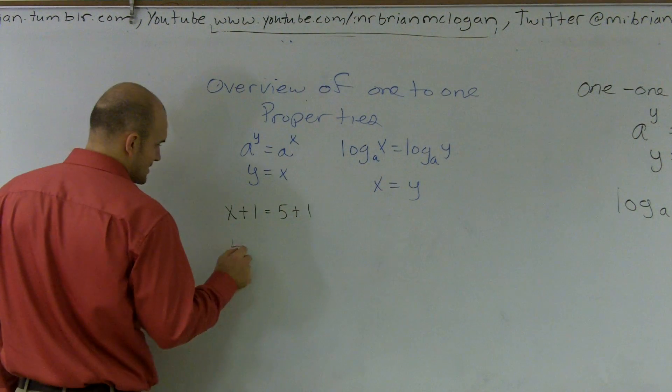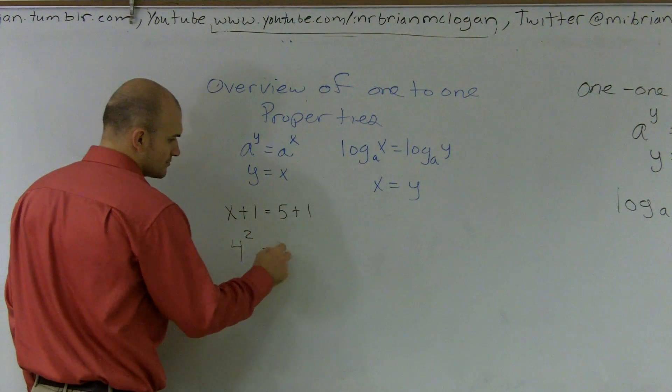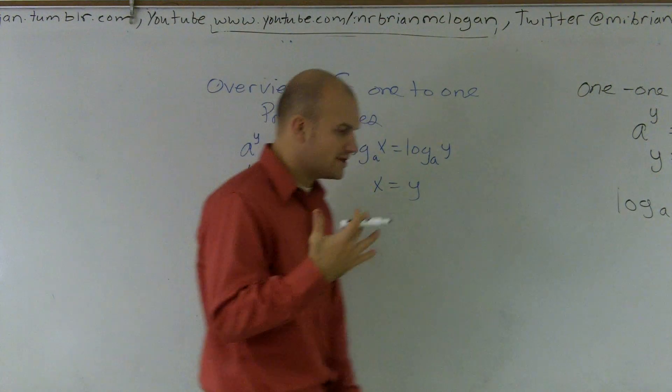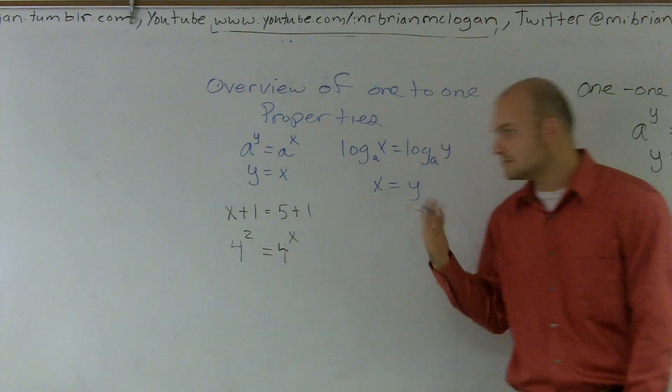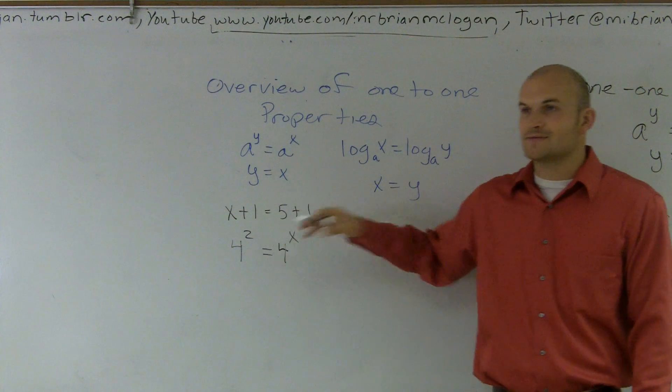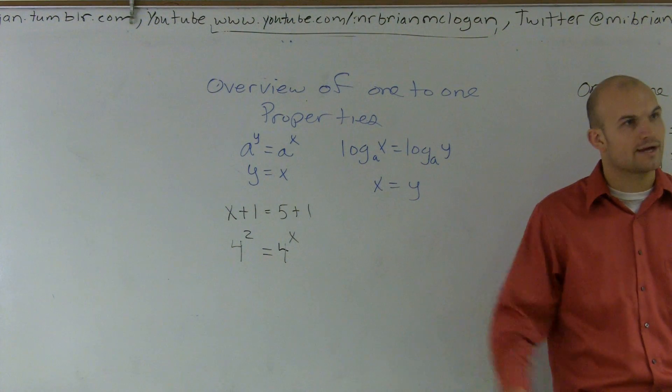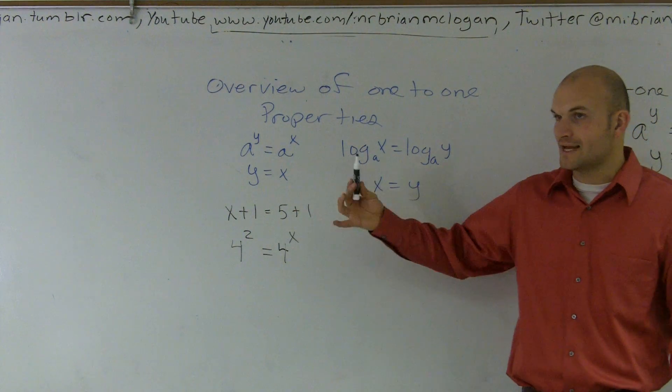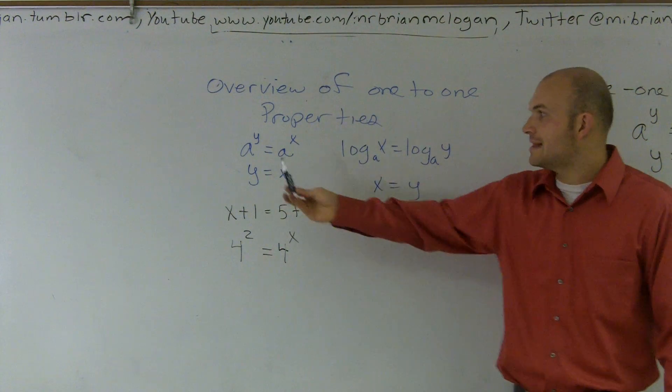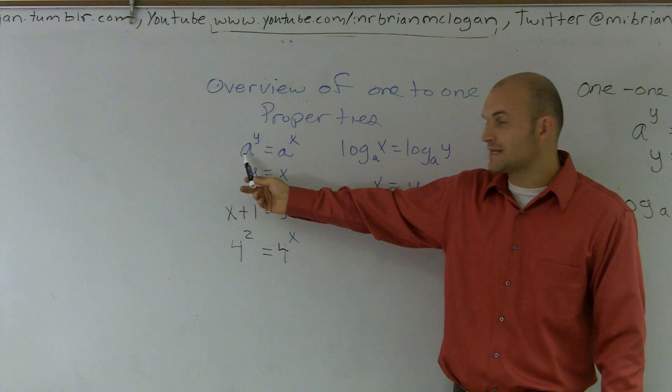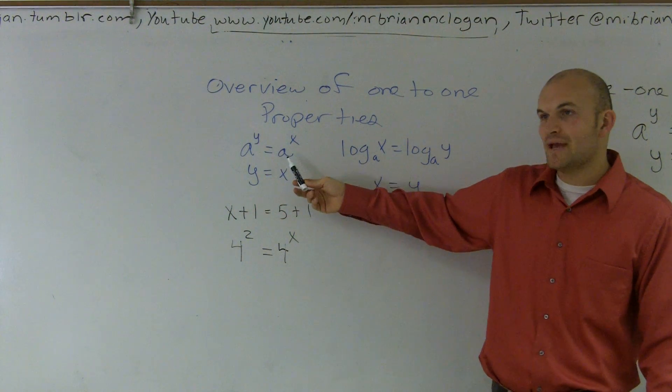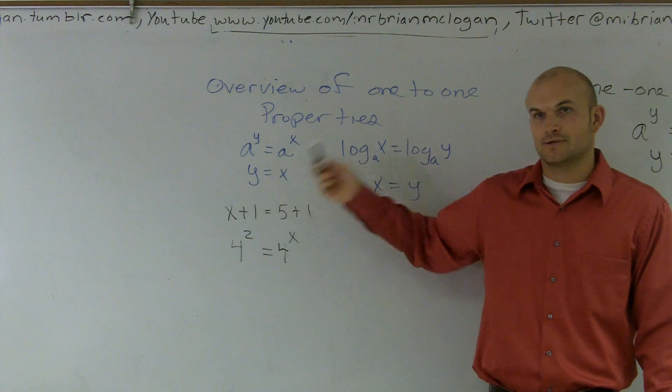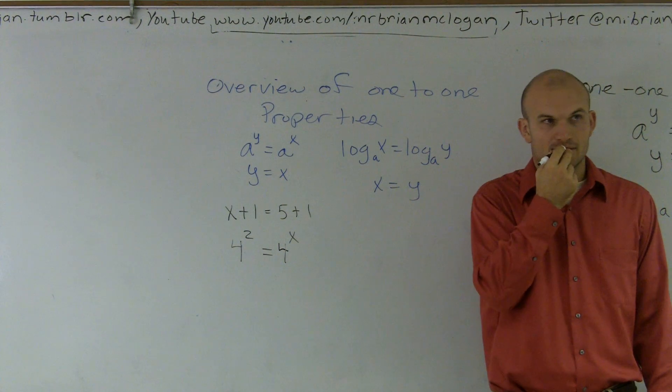So let's go a little bit harder. Let's say I have four squared equals four to the x power. Again, just what you guys have learned so far, in your mathematical minds, what is my only possible answer that x has to be? Two, right. That makes sense, doesn't it? So what I can say then is I can generalize, and actually that's what the one-to-one property states.